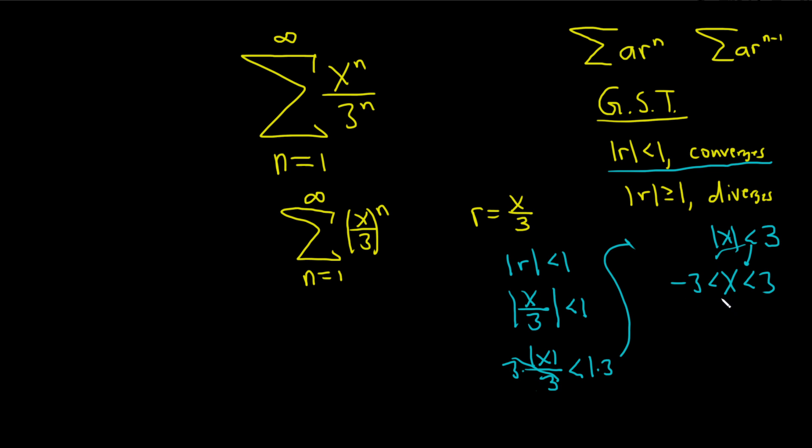Those are going to be the values of x for which our series converges. And there are no other values, right? Because these two cases are disjoint. The opposite or the negation of less than 1 is greater than or equal to 1. So it's going to diverge for all other values.